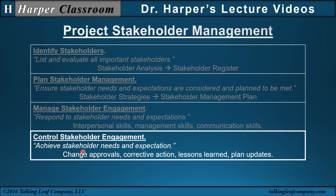Control stakeholder engagement: achieve stakeholder needs and expectations. Although it includes change approvals, corrective actions, lessons learned, and plan updates, control stakeholder engagement really has to do with monitoring and controlling the engagement of stakeholders — changing the stakeholders, the analysis, the strategies, and the plan when necessary to ensure adequate engagement from the very beginning to the very end of the project.